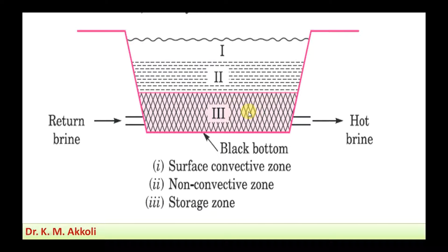The third zone is the storage zone — it stores heat because it contains dissolved salts such as sodium chloride and magnesium chloride. Because of the salt content, there is a density gradient from the bottom layer to the top. The top layer has lower density, the middle layer has higher density than the top, and the bottom layer has the highest concentration and density. When the salty water receives heat, its temperature increases, but because of the density difference, it does not move to the top layer, so heat is stored in this zone.